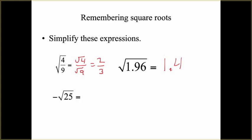Next, we're going to look at the opposite of the square root of 25. Remember when the negative sign is on the outside of the radical, the negative comes along — the square root of 25 is 5 — and we get negative 5. That's just going back and remembering what we did with square roots.